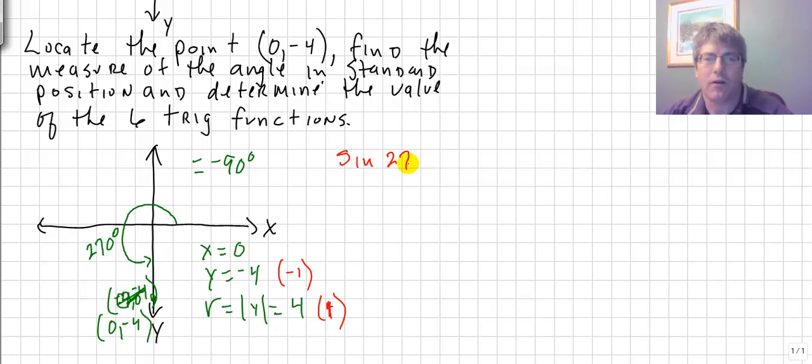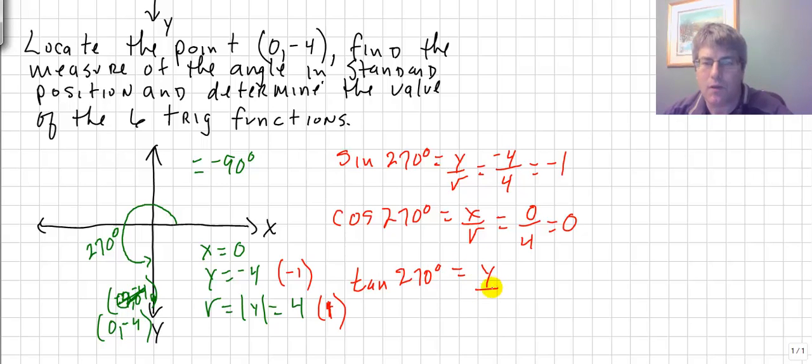The sine of 270 degrees is y over r, y is negative 4, r is positive 4, then we get negative 1. So you can see here, if we reduce them both by our common factor, we're still going to get our same answer, because we've got to reduce. So the cosine of 270 is equal to x over r, and x is 0, and r is 4, so that value is 0. And the tangent of 270 degrees is equal to y over x, so that's negative 4 over 0, so that would be undefined.